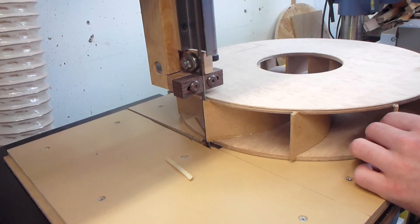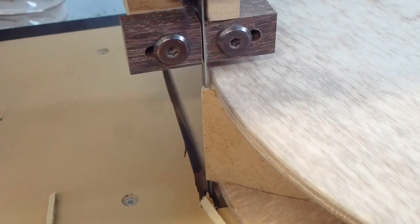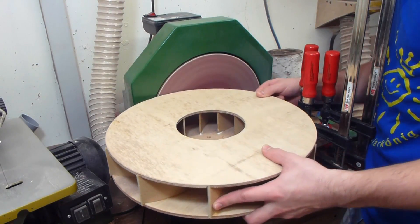Once dry I cut off the excess with the bandsaw and circle jig and then sanded it flush on the disc sander.